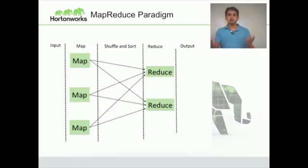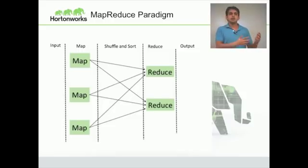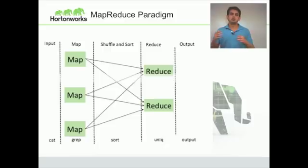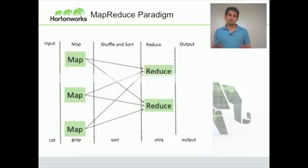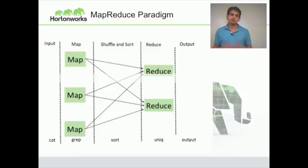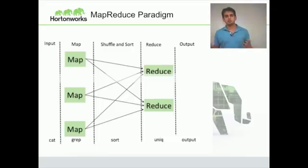If you look at the pictorial diagram, you have the input phase, the map phase, a shuffle and sort where aggregation is happening, followed by the reduce and the output phase. If you're a Unix geek, the analogy would be: cat, grep, sort, unique, and output. Your map phase consists of the input phase which is cat, the map is like grep if you're trying to find something, the shuffle and sort phase is essentially the sort in Unix, and then you have aggregation happening in the reduce, like unique. You can think of this as a large distributed pipeline for doing cat, grep, sort, unique, and output on thousands of commodity servers.